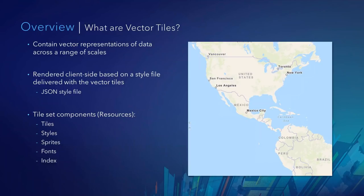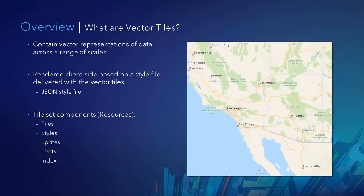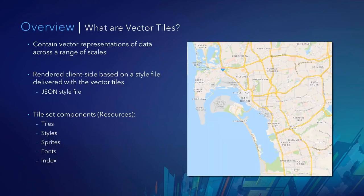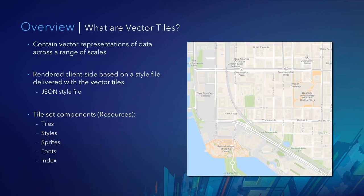So what are vector tiles? Vector tiles are Esri's newest format for the basemaps, and they contain a vector representation of data across a range of scales. They're rendered client-side based on a style file that is delivered with the vector tiles. That style is in JSON format and is part of the resources — the map tile, the JSON style file, the sprites which are point symbols such as road shields, as well as patterns, fonts, and the map index.